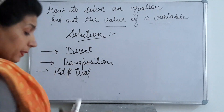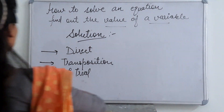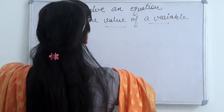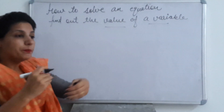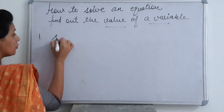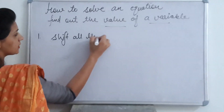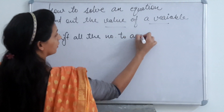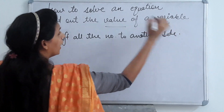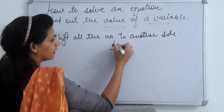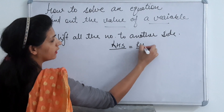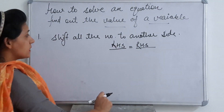Today we will discuss the direct method — how we solve equations using it. First, there are some rules to solve any equation and find its solution. Our equation has two parts: what is on the left side of the equal sign is our left hand side, and what is on the right side is our right hand side.